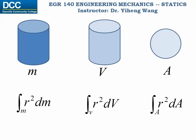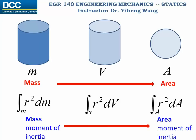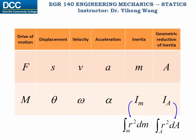So mass can be reduced to a 2D geometric representation — the area. And similarly, mass moment of inertia can be reduced to a 2D geometric representation — the area moment of inertia. I will give examples in the next two videos on how to calculate the area moment of inertia. But before that, I want to remind you that a lot of concepts are easier to understand if you consider them as counterparts.